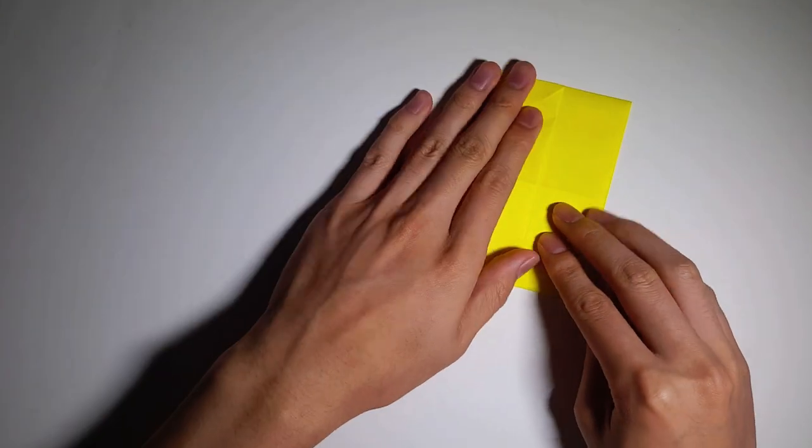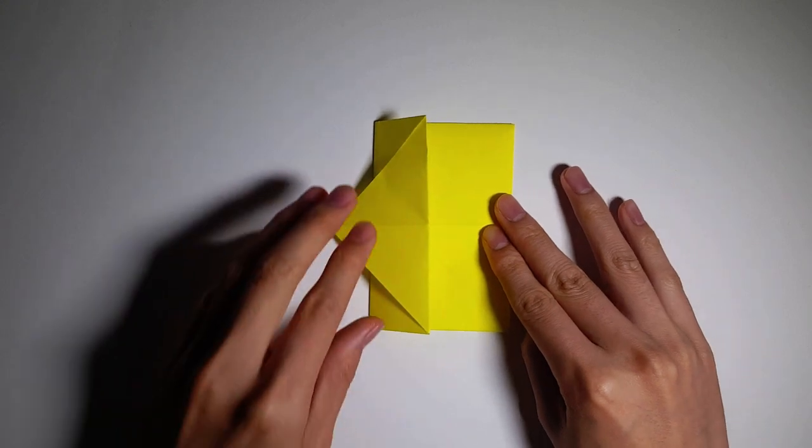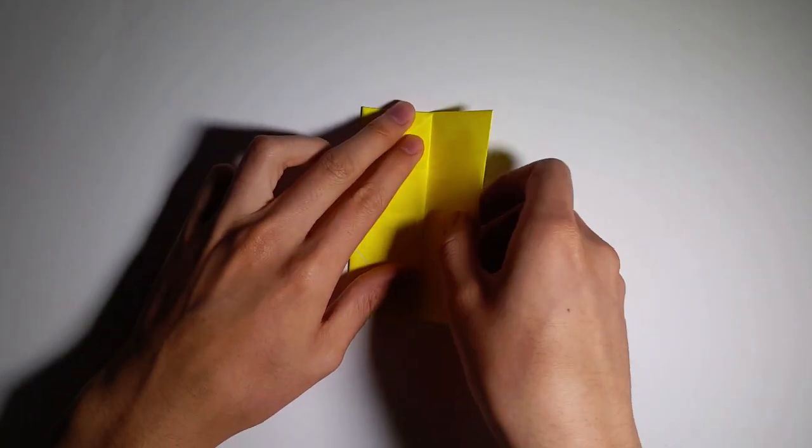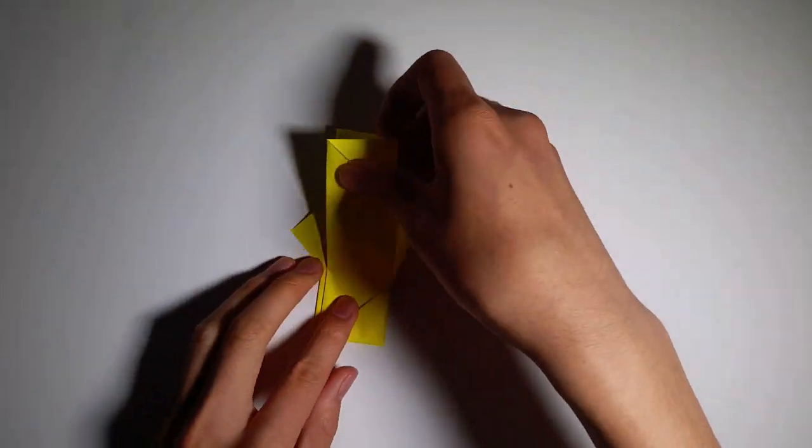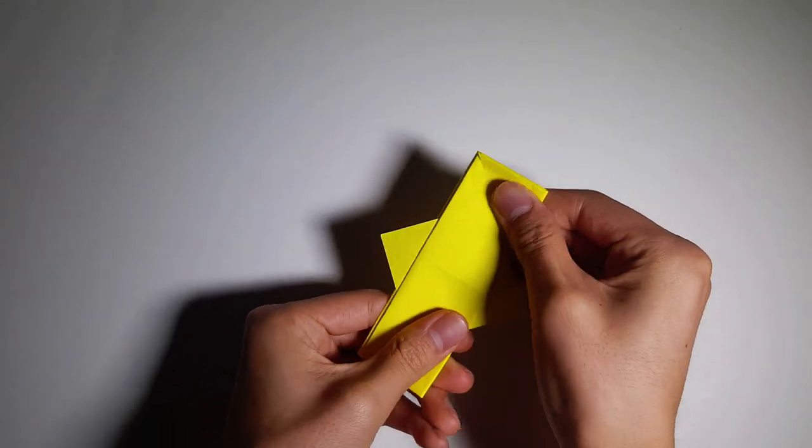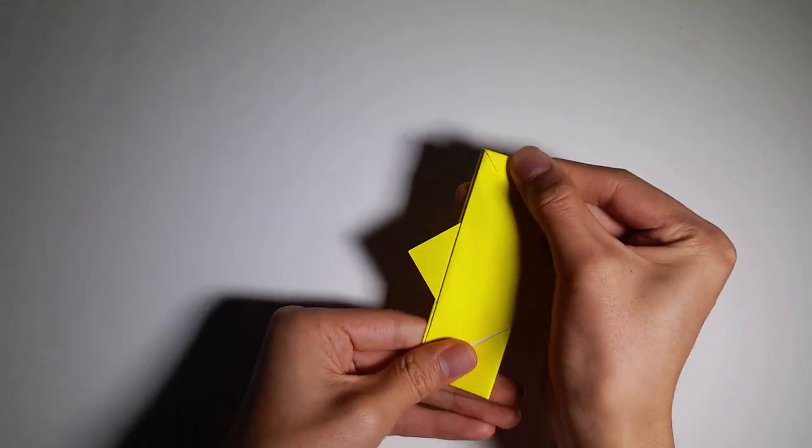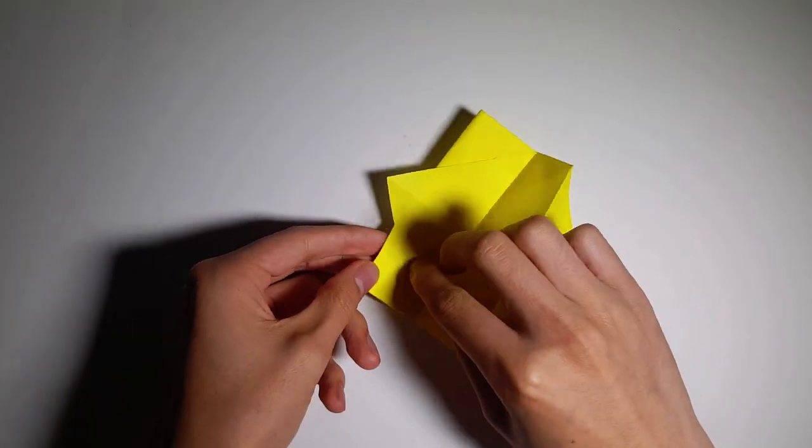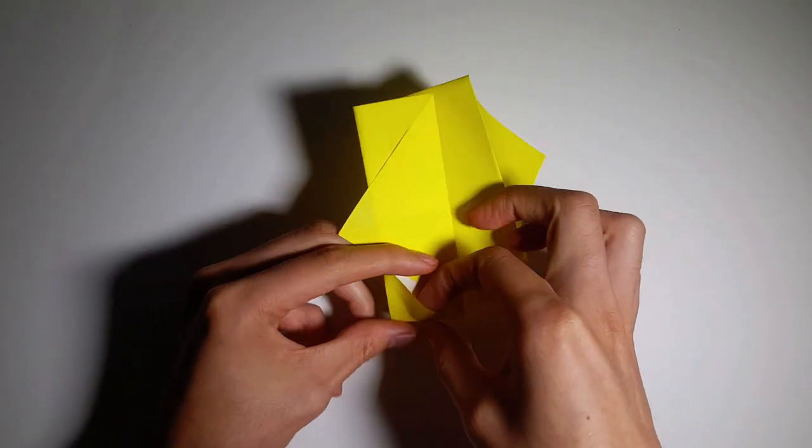And then with the next one, just checking, we're gonna bring it all the way back as well and crease it. So it should kind of look like this. So it should pretty much overlap or be exactly the same.